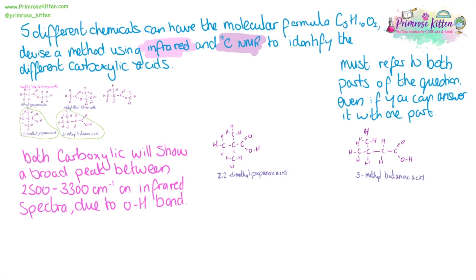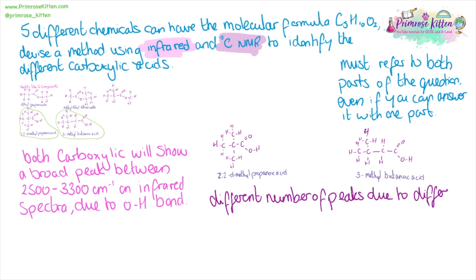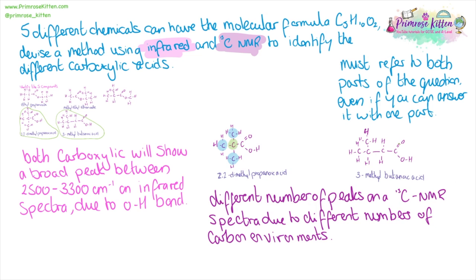Now we can see how we use carbon NMR to differentiate between these two carboxylic acids. These two carboxylic acids will have a different number of peaks on carbon NMR due to the different number of carbon environments. 2,3-dimethylpropionic acid will show three different carbon environments, whereas 3,3-dimethylpropionic acid will show four different peaks.